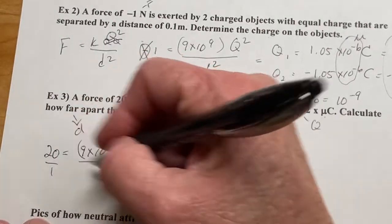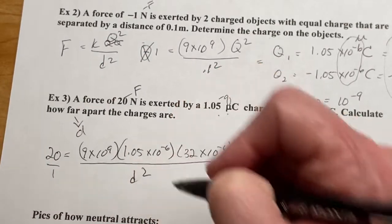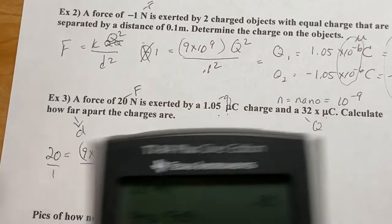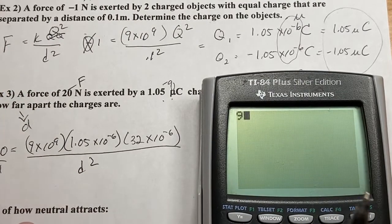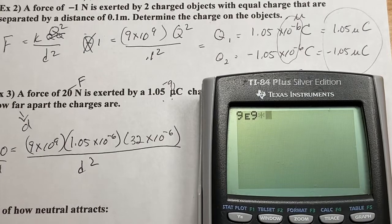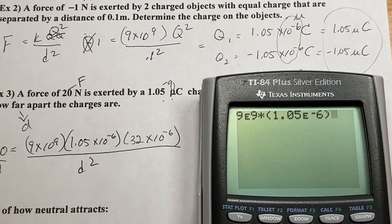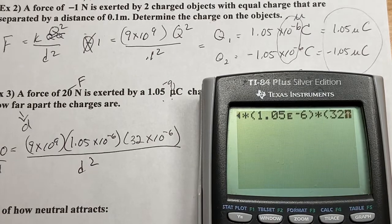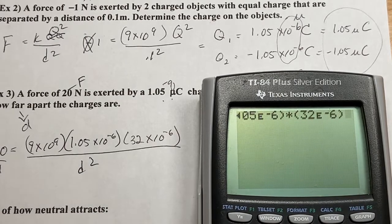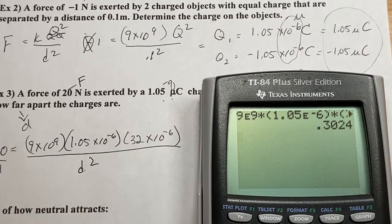So we do our cross multiply. The D squared is going to be here. It's going to be this divided by 20 when that works out. So let's work this out here. Alright. 9 second EE 9 times. I like parentheses. 1.05 second EE negative 6. These take a while. Put your calculator out and do this with me. Times parentheses 32 second EE negative 6. I like to multiply the top. And now I'm going to divide by 20.